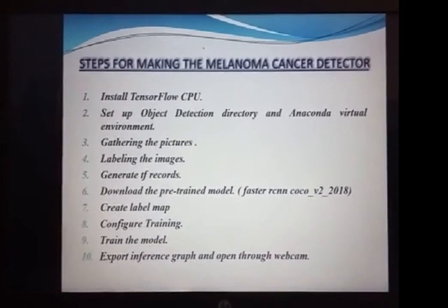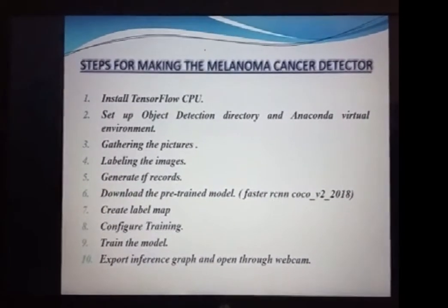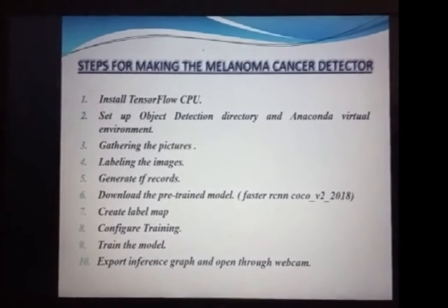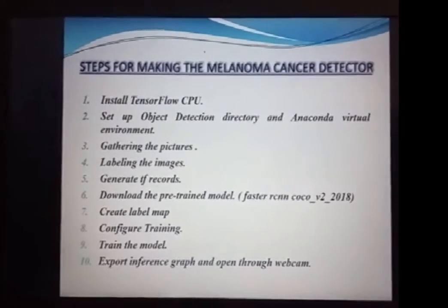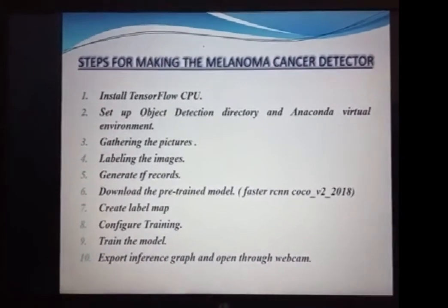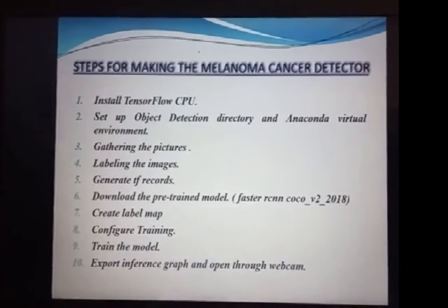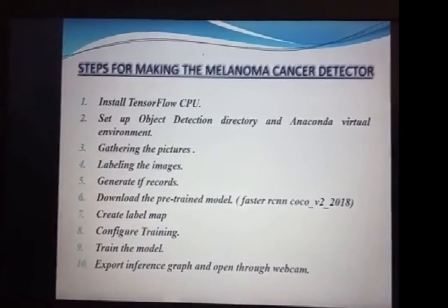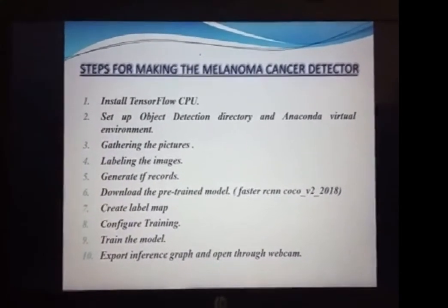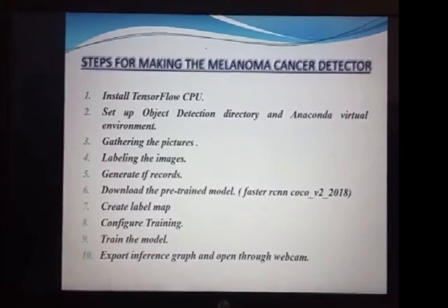In the third step, we downloaded all the images needed for our project from the Kaggle website. After downloading, we started labeling the images using the Label Image software. After labeling each and every image, we generated XML annotations for each image, containing details like X and Y coordinates, X mean, Y mean, etc. Finally, we converted the XML annotations to CSV records, and then generated the TensorFlow records for each of the CSV records.